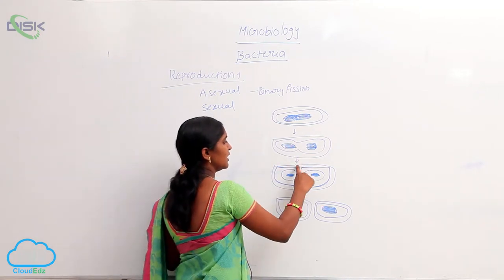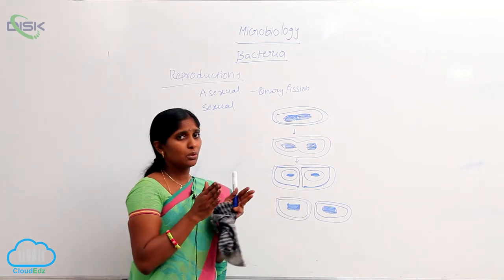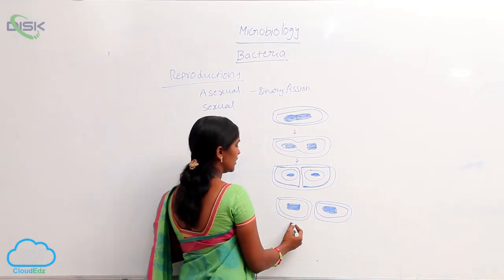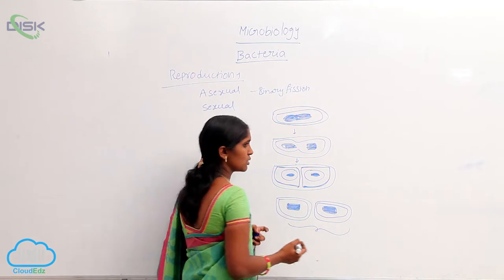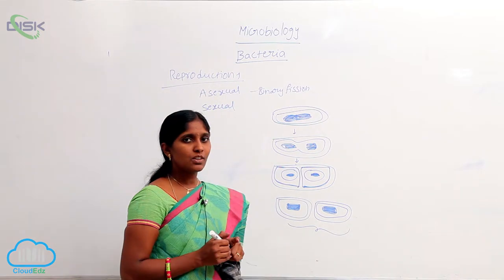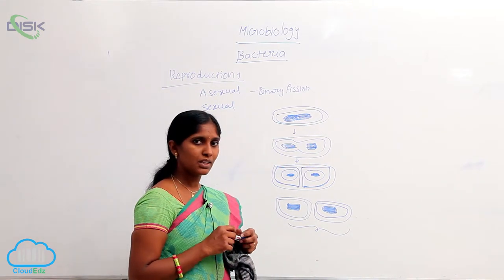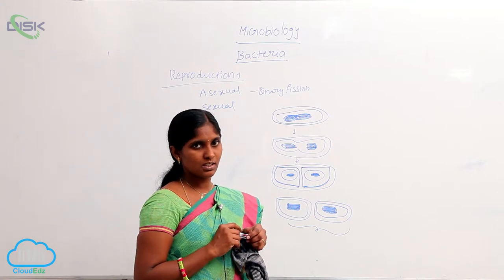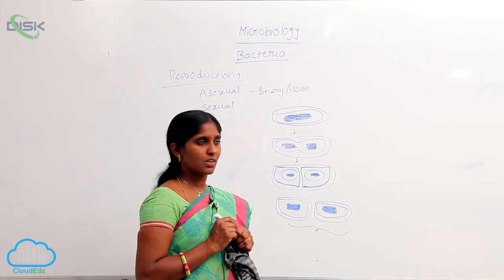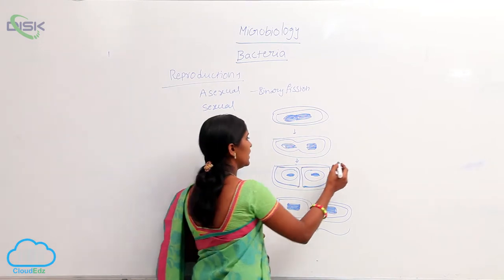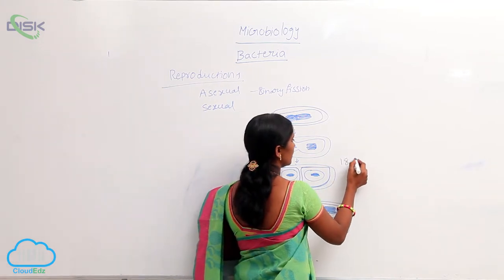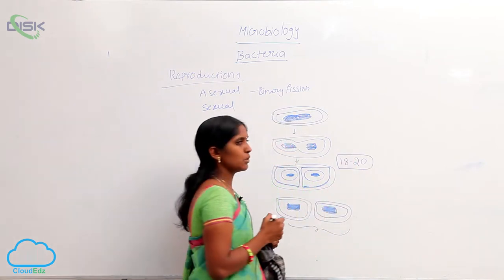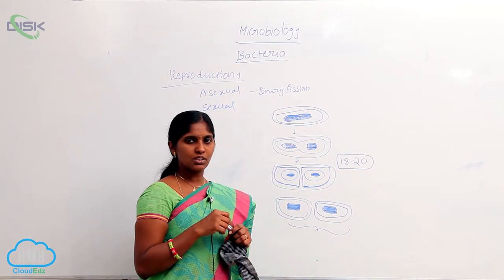The nicks are extended and separate the two daughter DNAs into two daughter cells. So from one mother bacteria cell, it is cleaved into two daughter cells at the end of binary fission. This process is done every 18 to 20 minutes, producing a large number of daughter cells within a very short time.